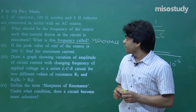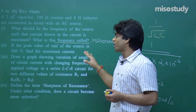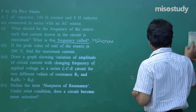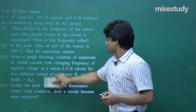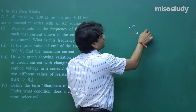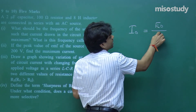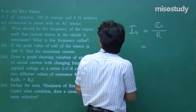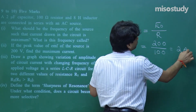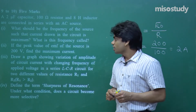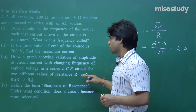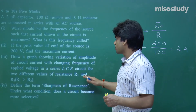Next: if the peak value of the EMF is 200 V, find the maximum current. At resonance, peak current = E₀/R = 200/100 = 2 ampere. Then: draw a graph showing variation of amplitude of circuit current with changing frequency of applied voltage across a series LCR circuit for two different values of resistance R₁ and R₂.